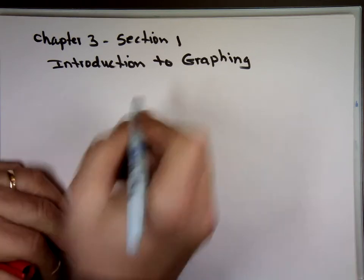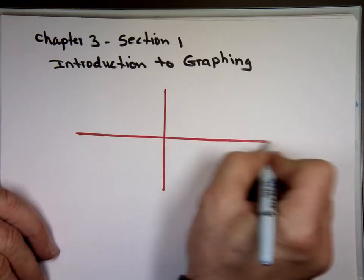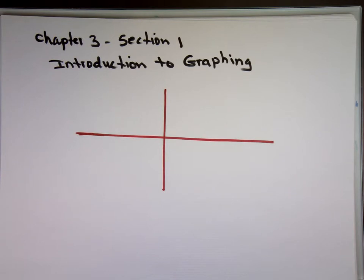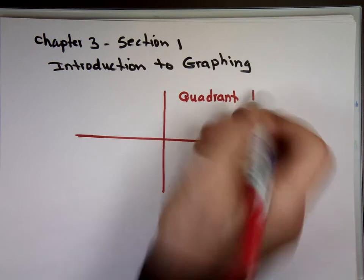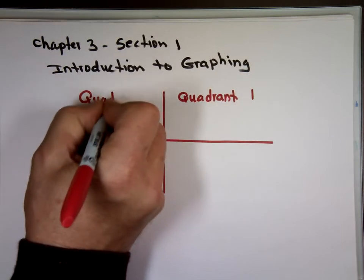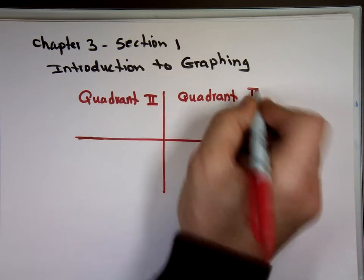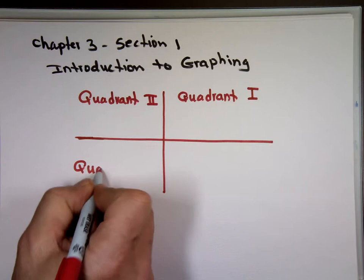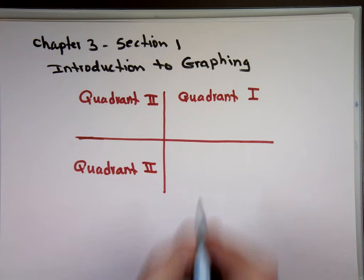Some of you call this the xy-plane. So we have four quadrants. This is called quadrant 1. Notice when we count them, we count them counterclockwise. Quadrant 2, and this is 1. Quadrant 3.